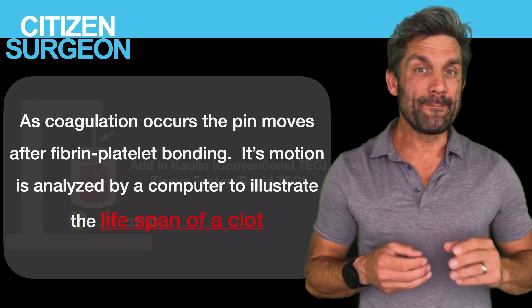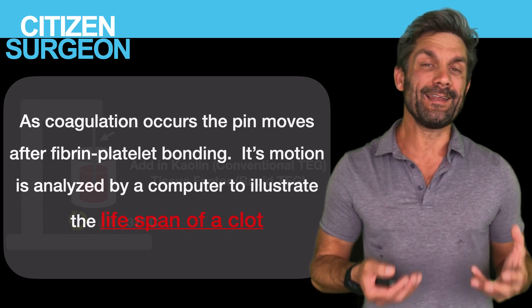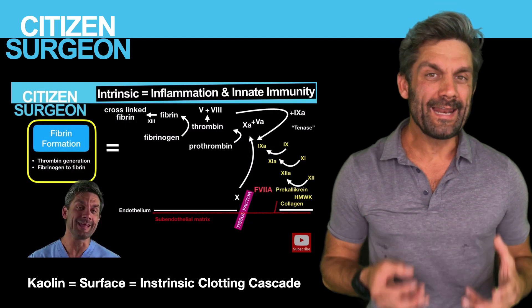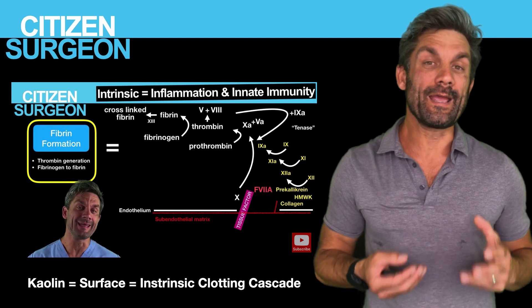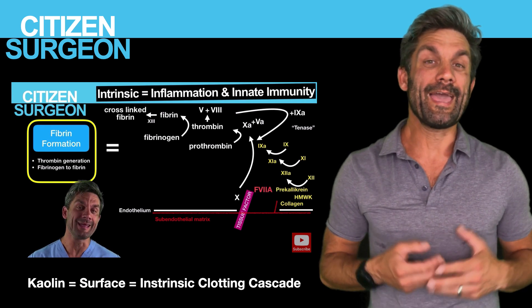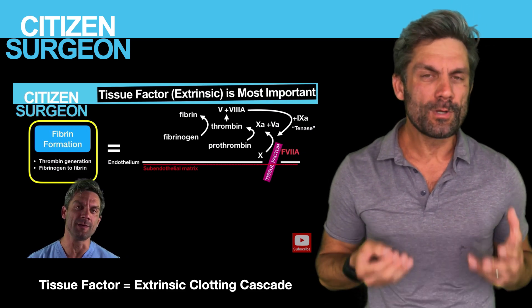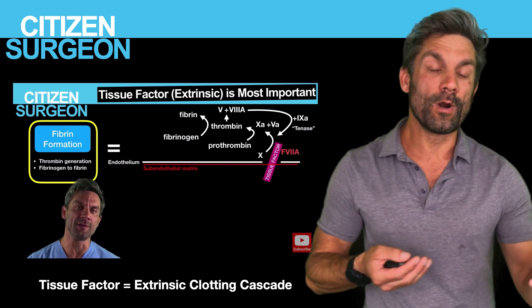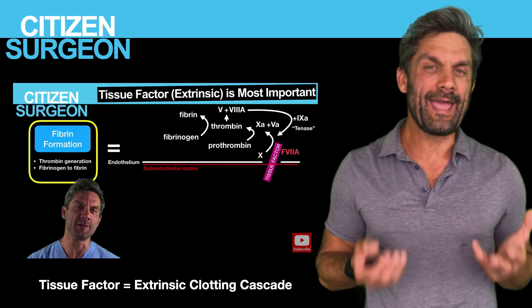During coagulation, the pin moves due to fibrin and platelet bonding. That movement is picked up and analyzed by the computer software, showing the lifespan of the clot. I'll put links to my videos on the coagulation cascades above — they'll give you a great foundation for understanding the difference between conventional and rapid TEG and why adding kaolin versus tissue factor matters.